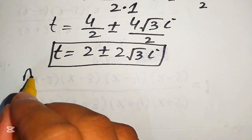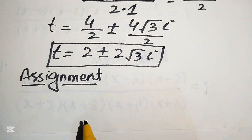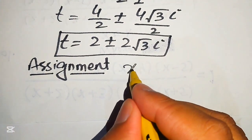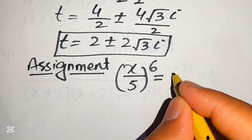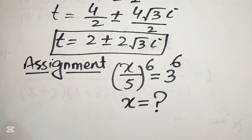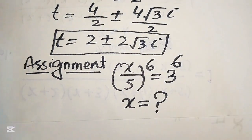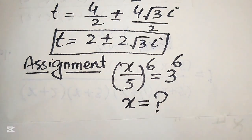Now for your assignment: if (x/5)^6 equals 3^6, solve for all values of x. You should get 6 solutions. Write your answers in the comment section. Thank you so much for watching — please subscribe to the channel for more videos.